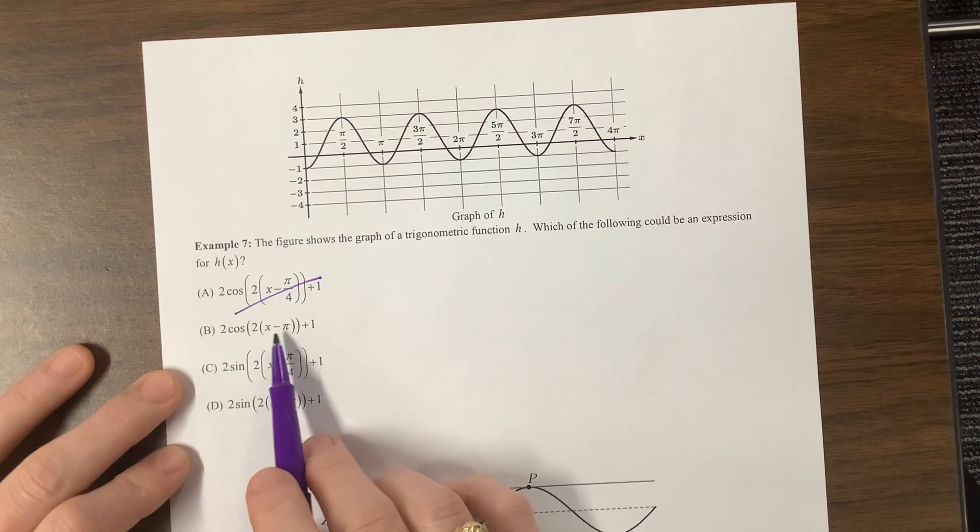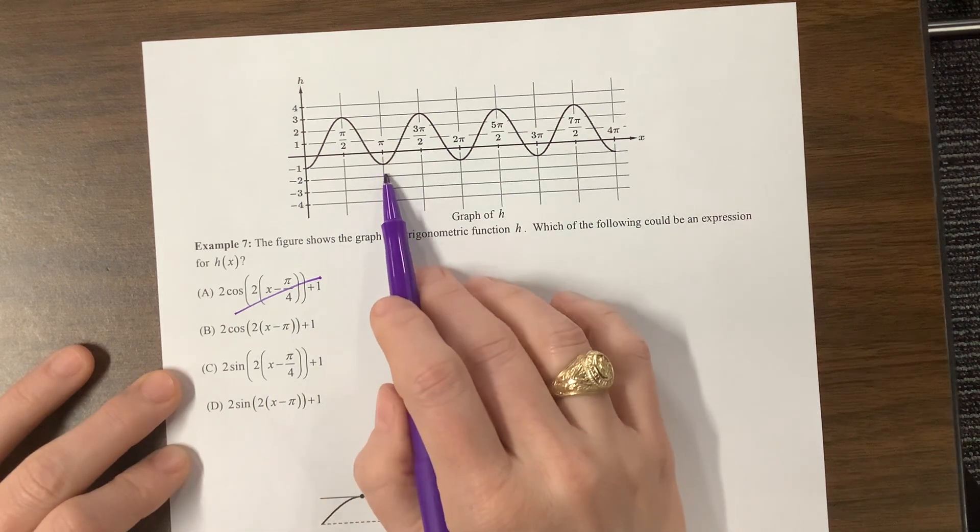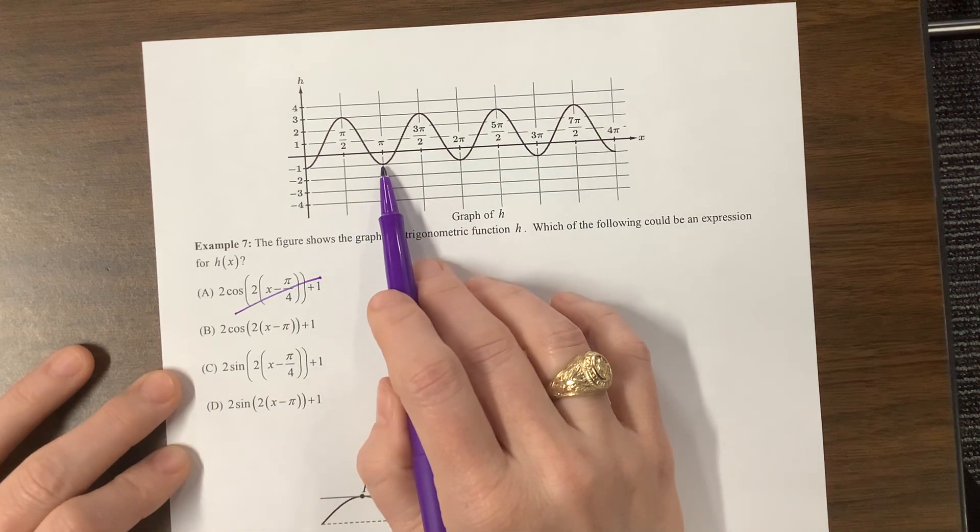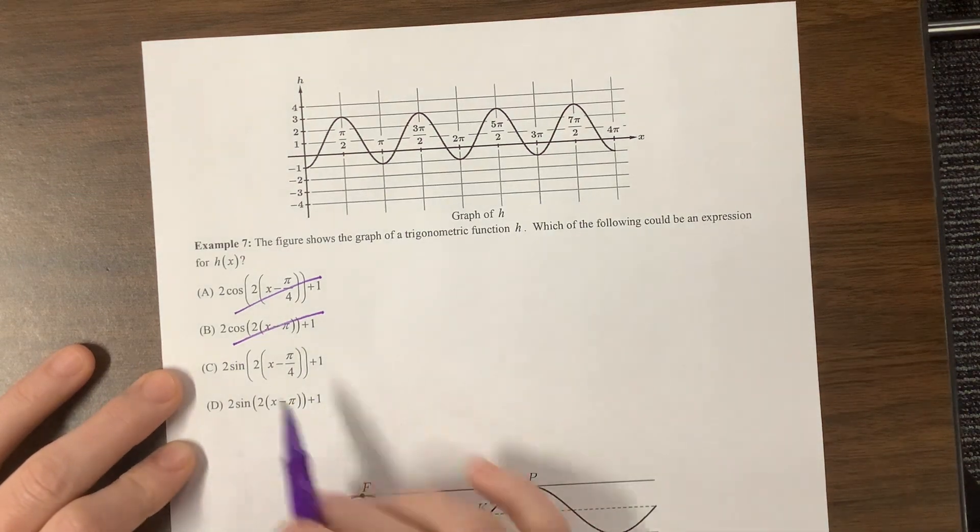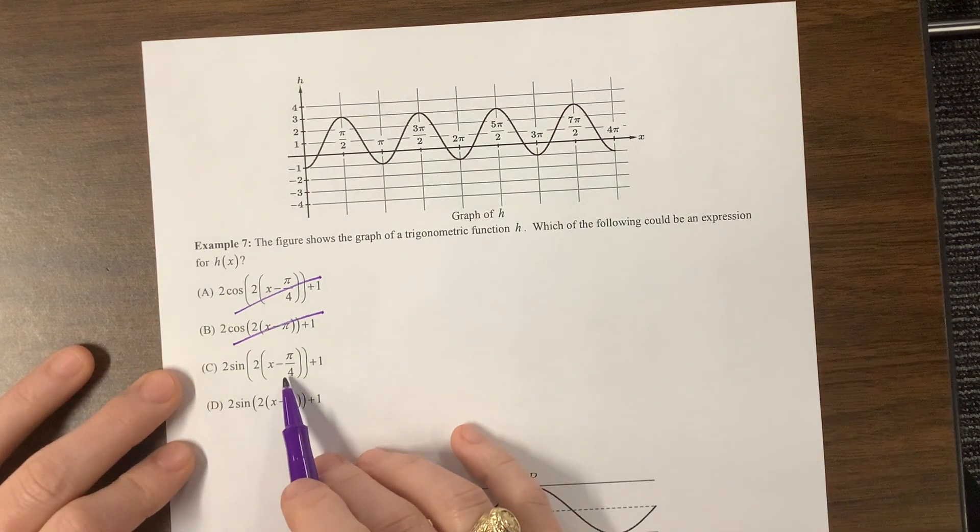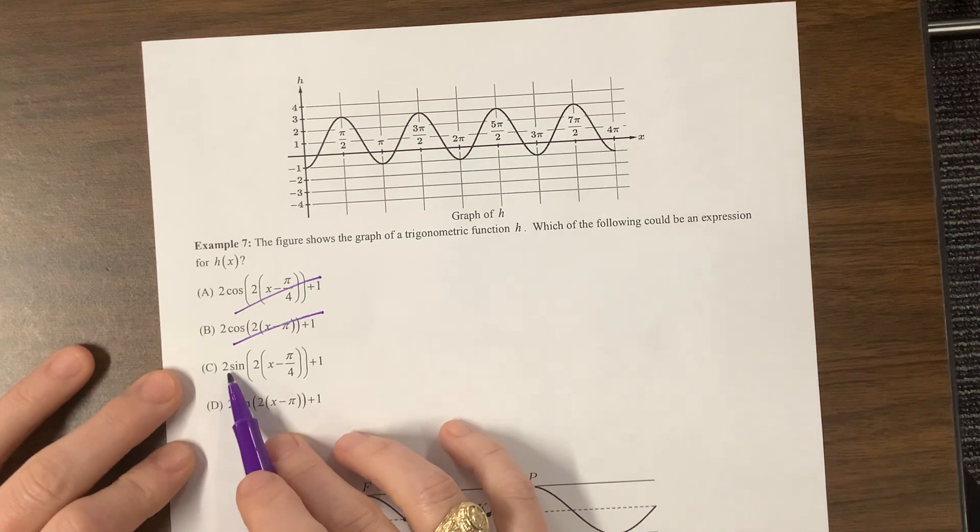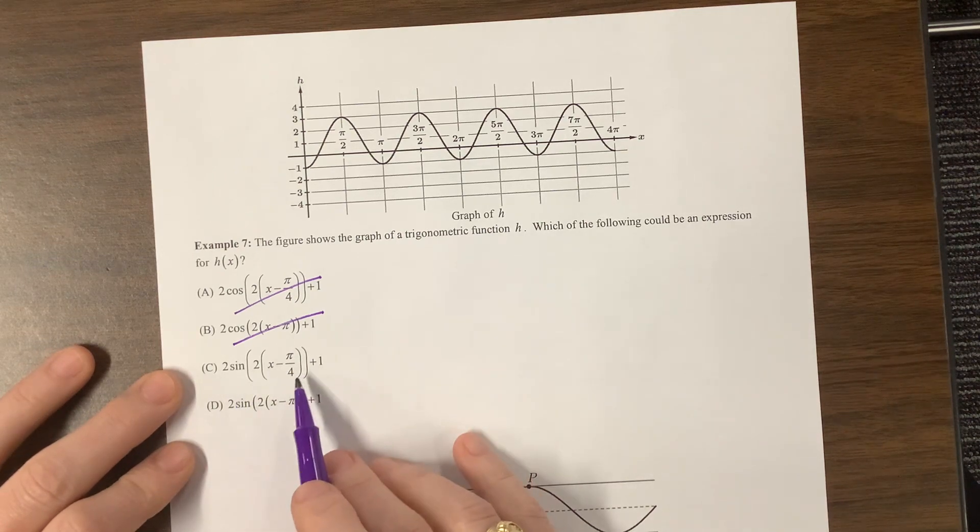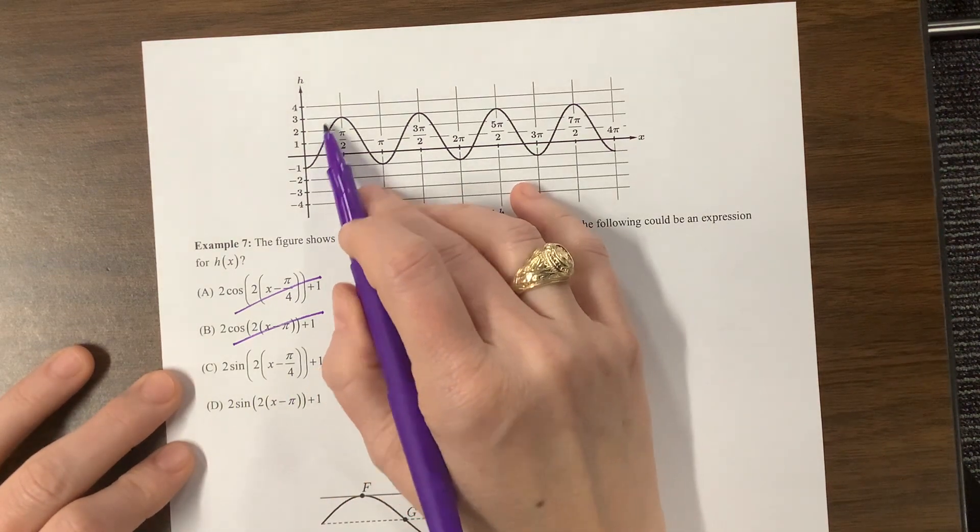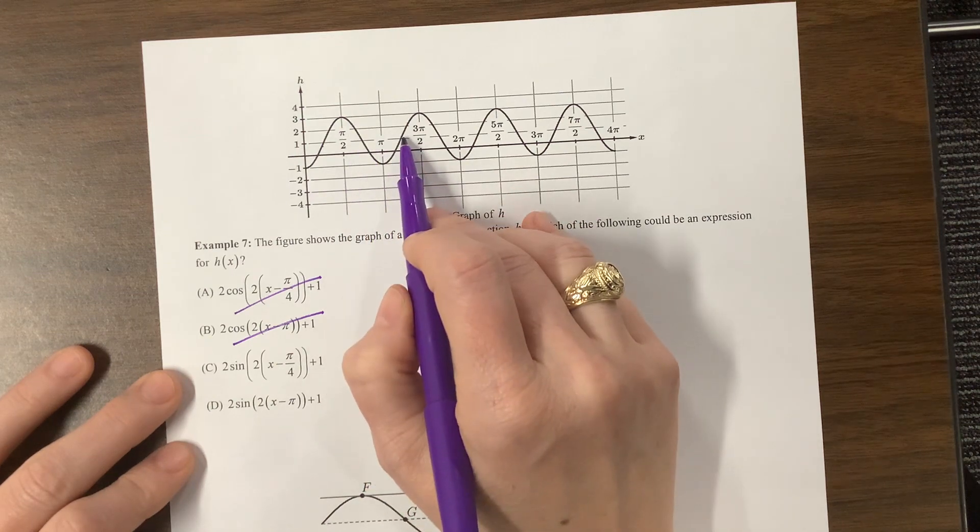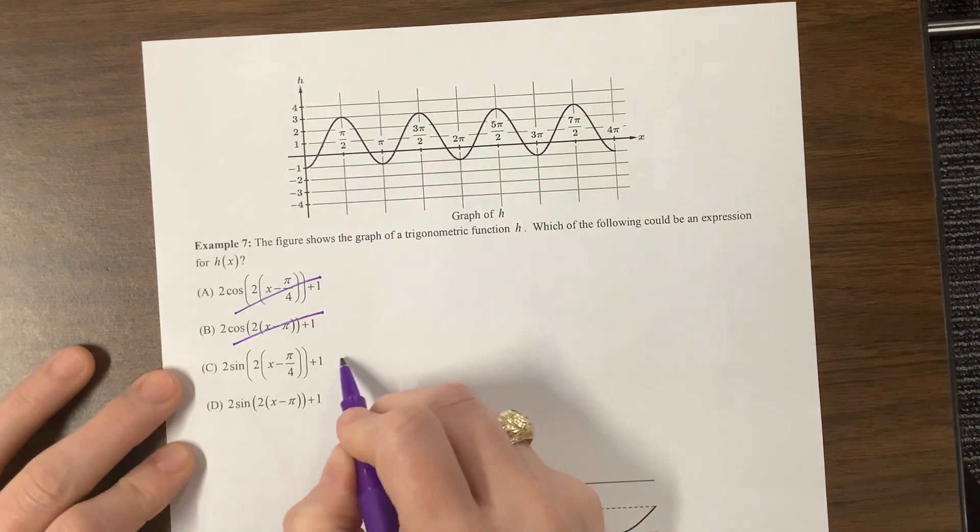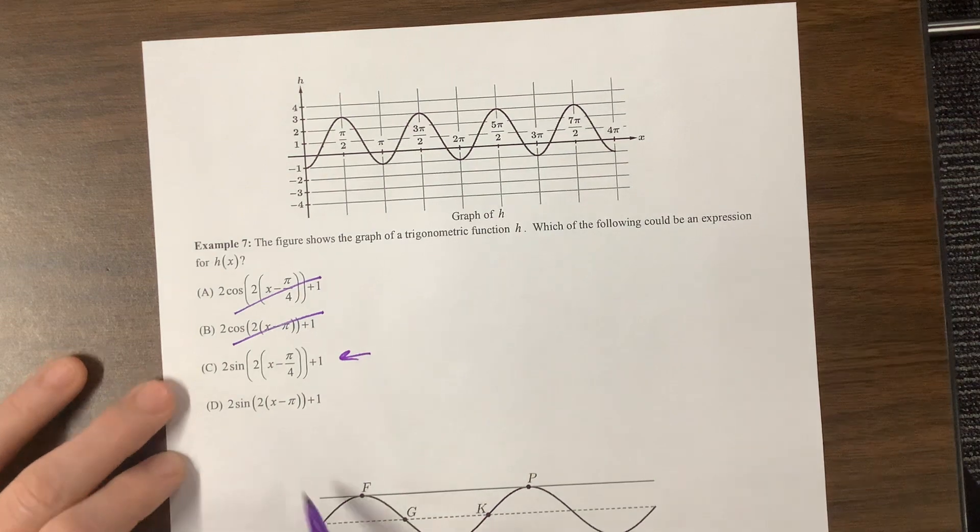Once again, this one, we now shift it to the right pi. So the very top should start at pi, and it does not. The very top should start at - this is sine, so the midline is going to start at pi over 4. So at pi over 4, and then we go up, and then we come back down, that looks good. I'm optimistic about that one.